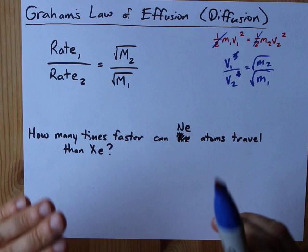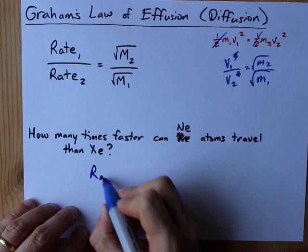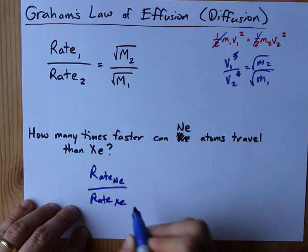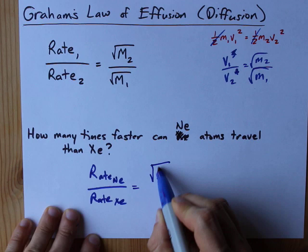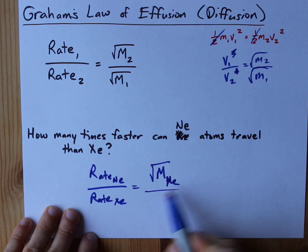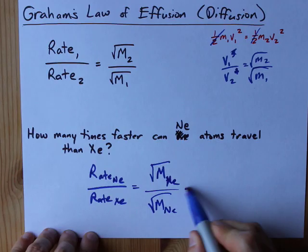The point is that neon is smaller, and so moves faster. But how much faster? Well, we're trying to compare the rate of Ne to the rate of Xe. How many times faster is it? Put Ne on top. We need the molar mass of Xe in the numerator of the other fraction, and the molar mass of Ne on the bottom of this fraction.